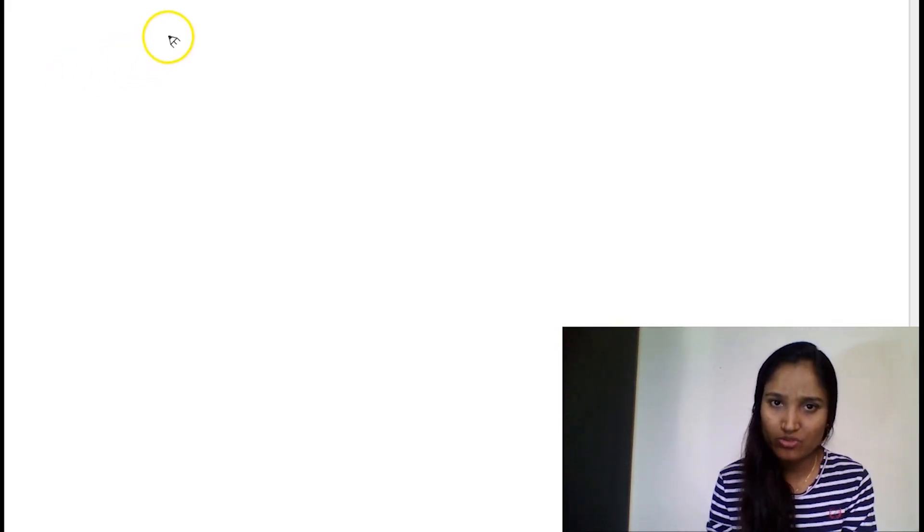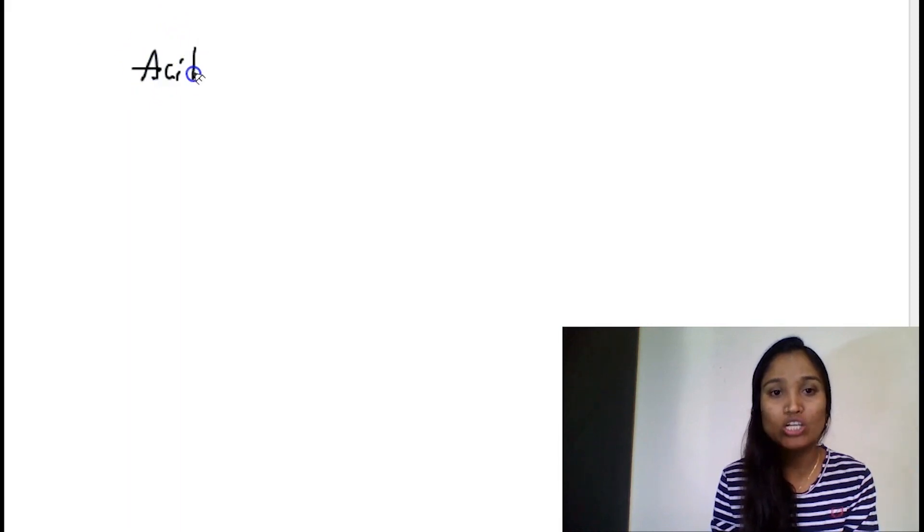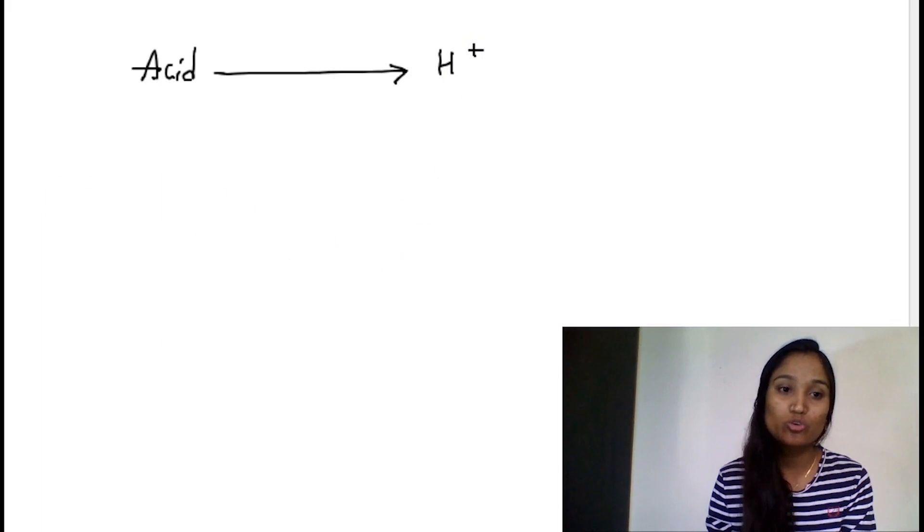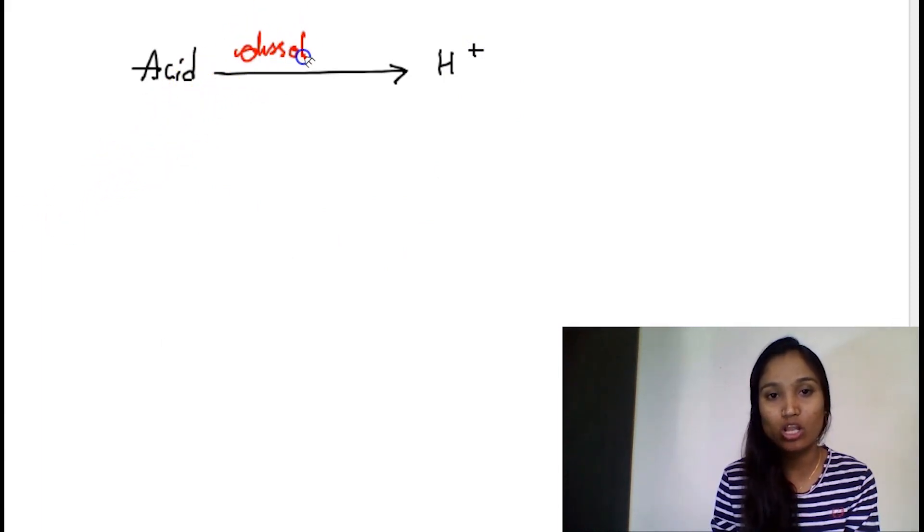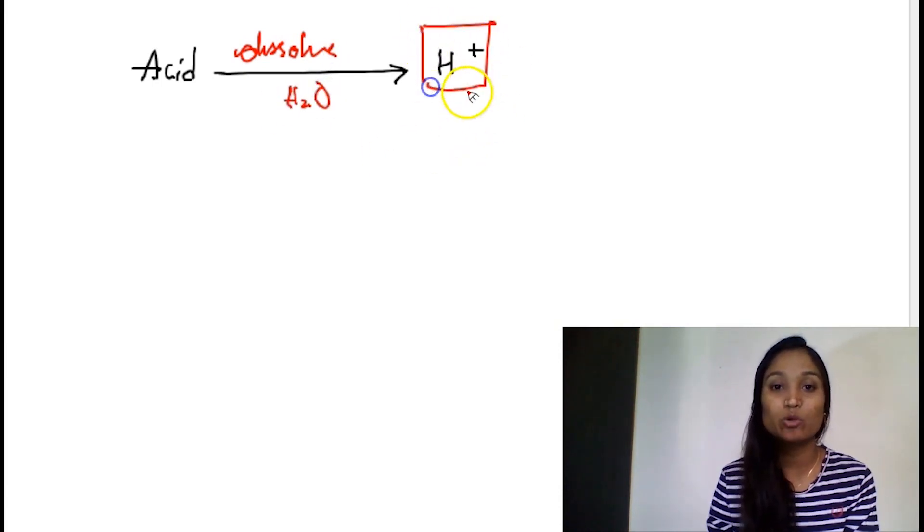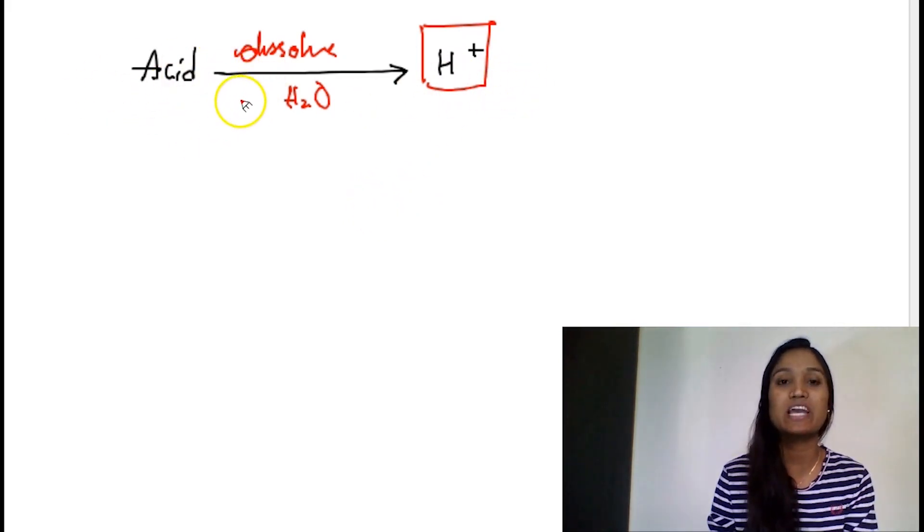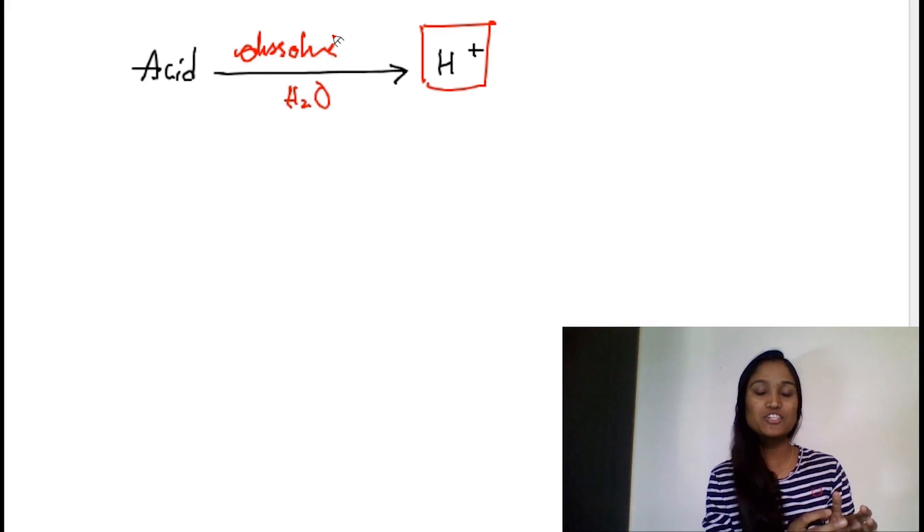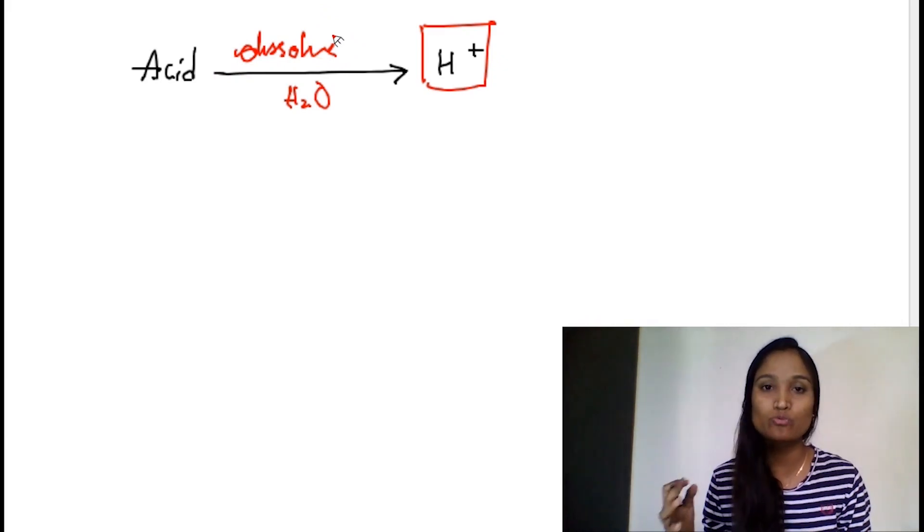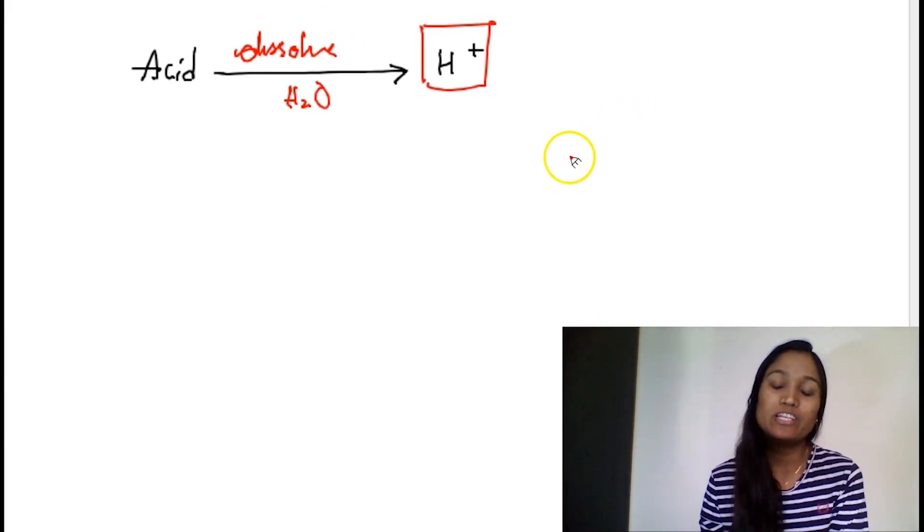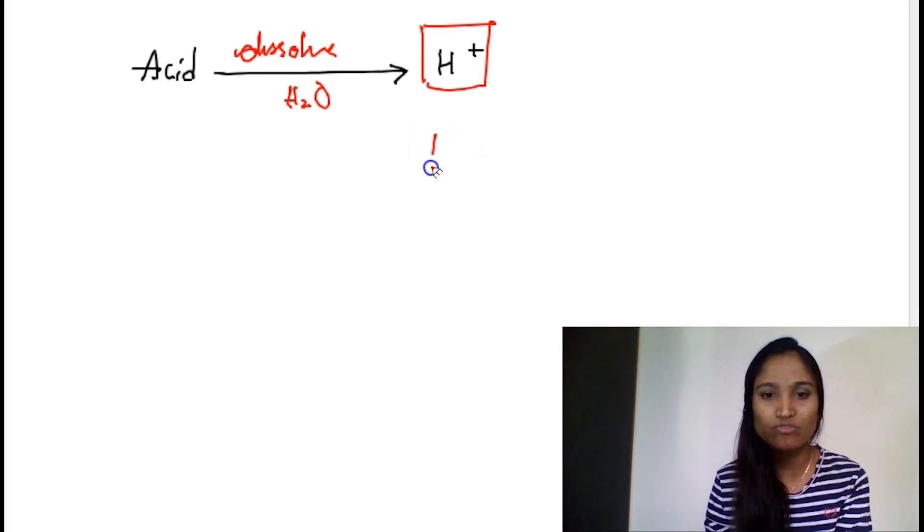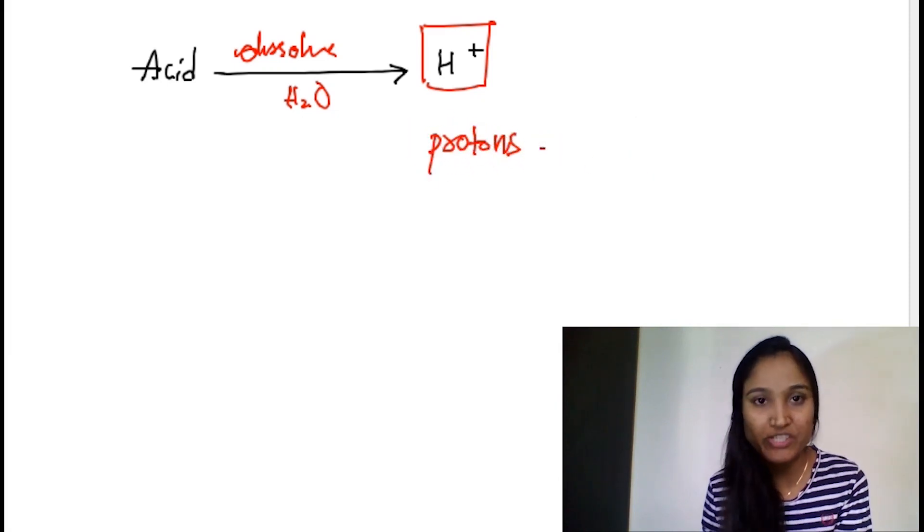According to that first definition, acid is a substance which on dissolving into water produces H plus ions. In short, acid on dissolution into water leads to formation of H plus ions, which are commonly called as protons.